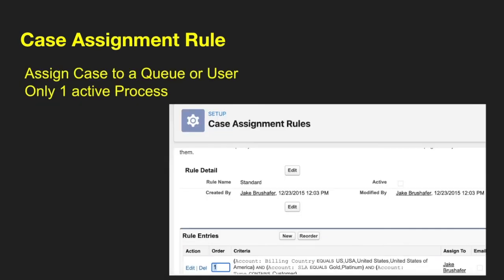Next up, we have case assignment rules, which allow you to assign ownership of a case to a queue or a user. You can only have one active process at a time, but you can have multiple rule criteria. When you build an assignment rule, always put your most restrictive criteria at the top and your least restrictive at the bottom. That way, when your case comes in, it gets assigned to the correct person. If you make it too broad at the top, it's going to hit those filters first and never reach your more dynamic filters at the bottom.